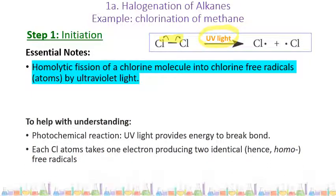Some additional notes: any reaction that uses UV light is a photochemical reaction. Each chlorine atom takes one electron, producing two identical free radicals.